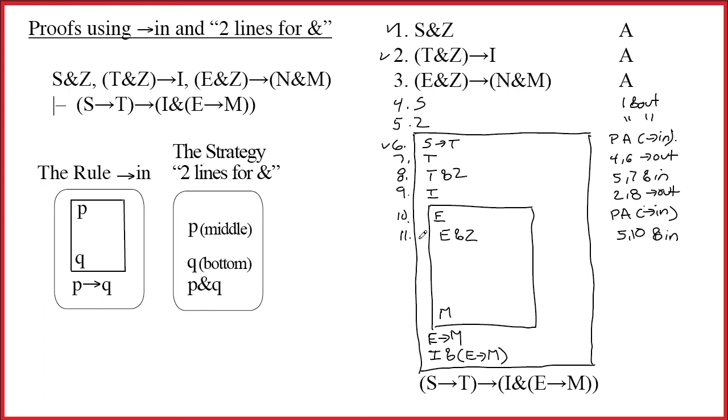We know why we did that. So, we can do the arrow out and get N ampersand M. 3,11. And at this point, we are pretty much done. All I need to do is the ampersand out to get the M. Here's one of these cases where you don't really have to take both parts and put them on separate lines. I'm going to go ahead and do it because there's no reason not to. But this line 13 N is really completely extraneous. I only really need the M on 14. But success!